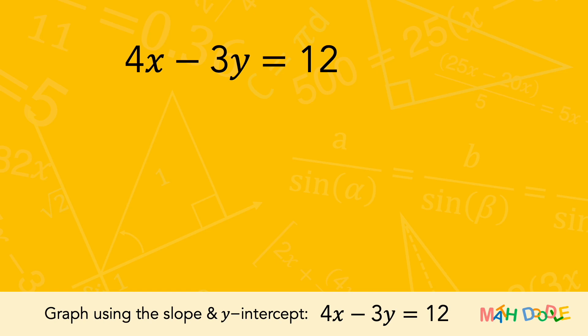To graph this equation, let's first rewrite the equation in the slope-intercept form. In the slope-intercept form, the left side of the equation has only y, and the right side of the equation has the term with x, as well as the term without any variable.